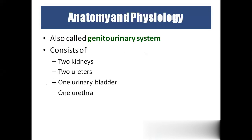The genitourinary system refers to the urinary system in males, because the urethra extends into the penis around 8.5 inches in length. It consists of 2 kidneys, 2 ureters, 1 urinary bladder, and 1 urethra.